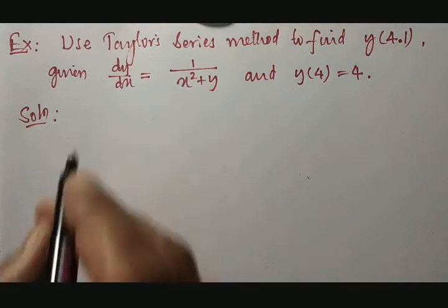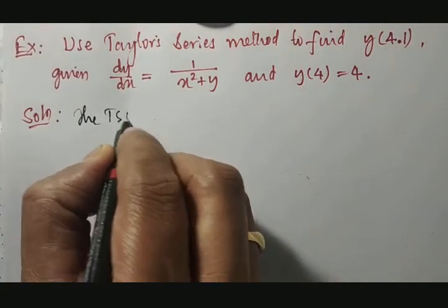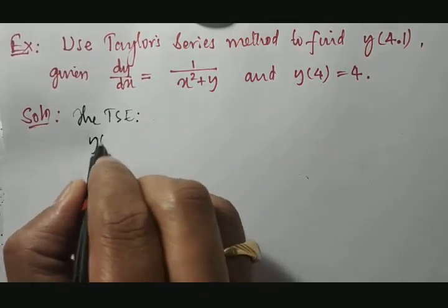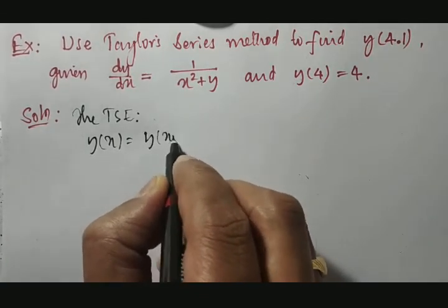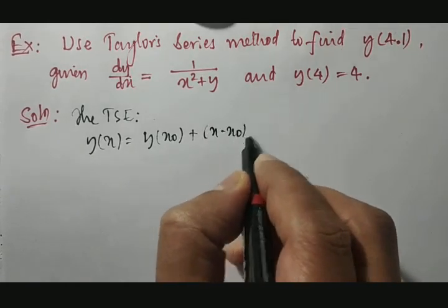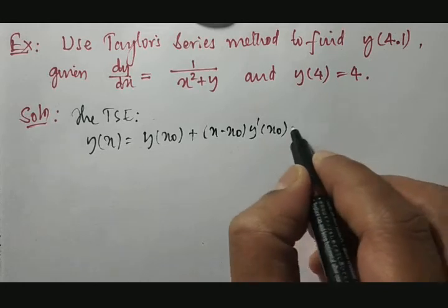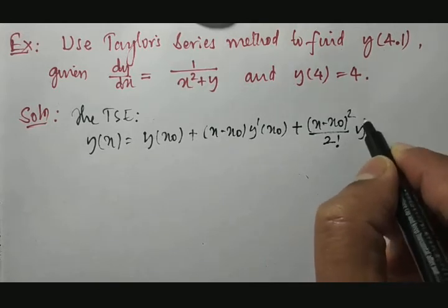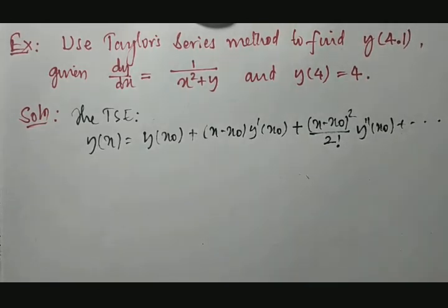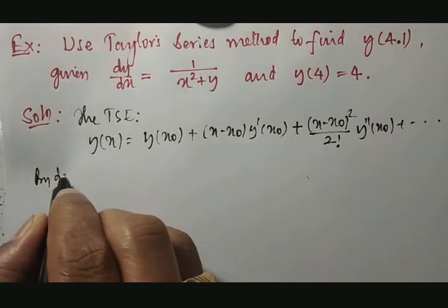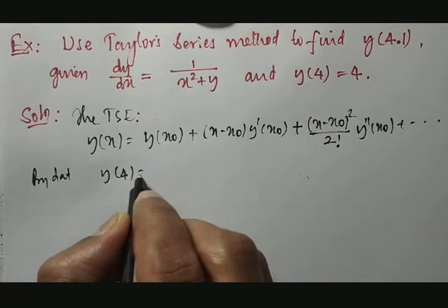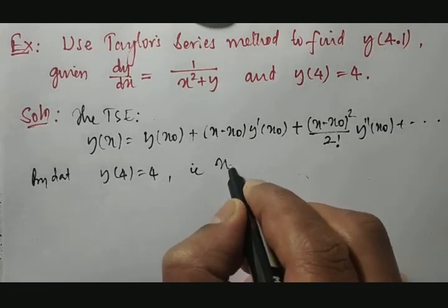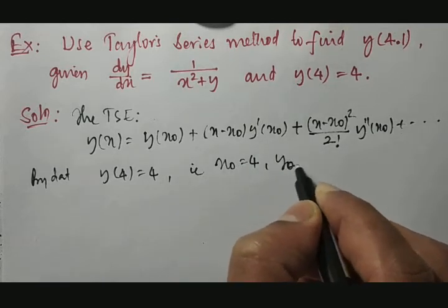First, I will be considering the Taylor series expansion which says y(x) = y(x₀) + (x − x₀)·y'(x₀) + (x − x₀)²/2! · y''(x₀) + and so on. Since the problem has not mentioned how many terms to take, we will take at least 3 terms. By the given data, y(4) = 4, which means x₀ = 4 and y₀ = 4.